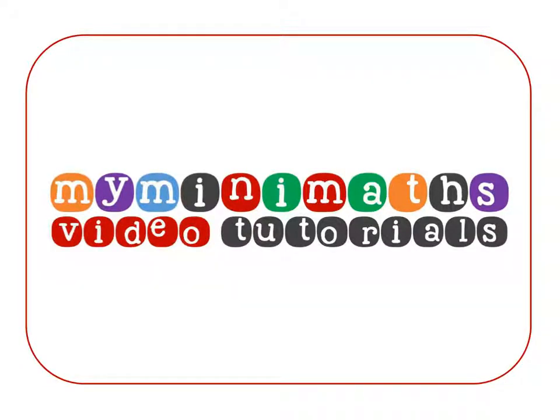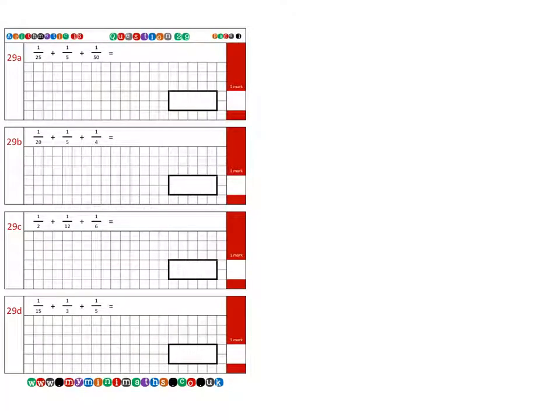Hello, and welcome to today's myminimaths.co.uk video tutorial. Today we're going to be looking at the arithmetic 16 question 29 practice question, which is adding together three different fractions, but they all have related denominators at the bottom.